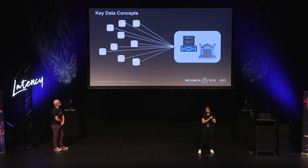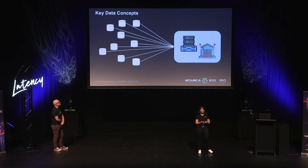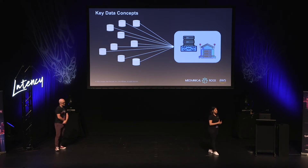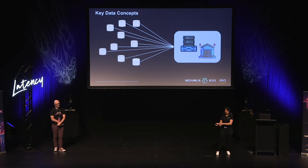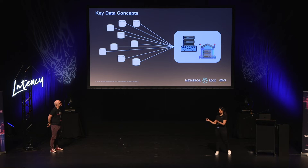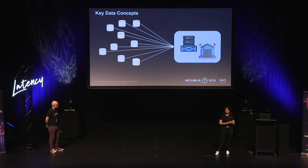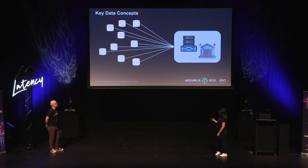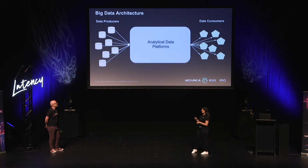A data lake is basically an object store where you dump your files and unstructured data, and then you can run analysis on it later. A data warehouse, on the other hand, is often a place where you hold your more structured data and it has more compute power — you can run more complex and sophisticated queries on the data. Today, we're going to focus on the analytical side.